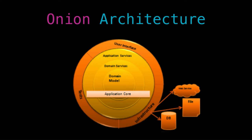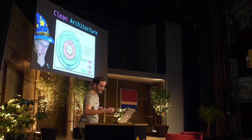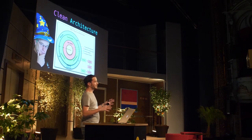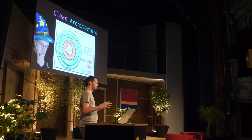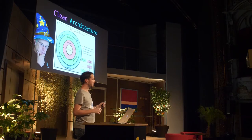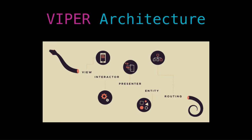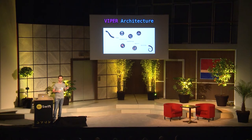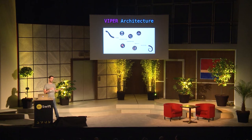In 2012, the clean architecture was created by Uncle Bob. It shares some ideas with the onion architecture, especially the fact that it uses circles instead of boxes. Two years later, the guys at Mutual Mobile presented the Viper architecture — which is not a new architectural pattern per se, but rather the clean architecture adapted for an iOS context.